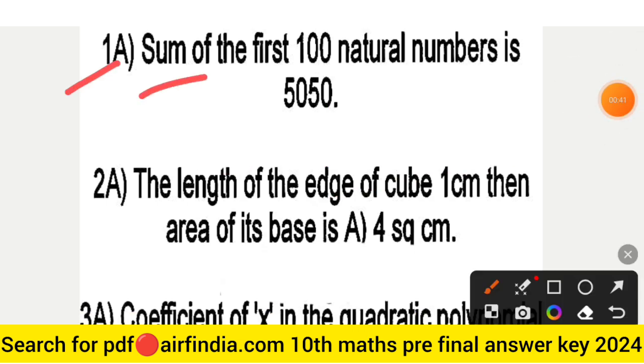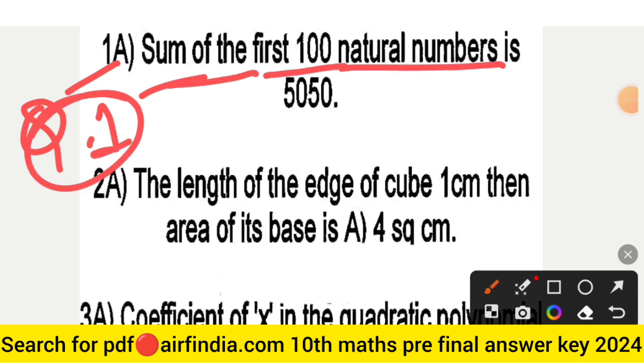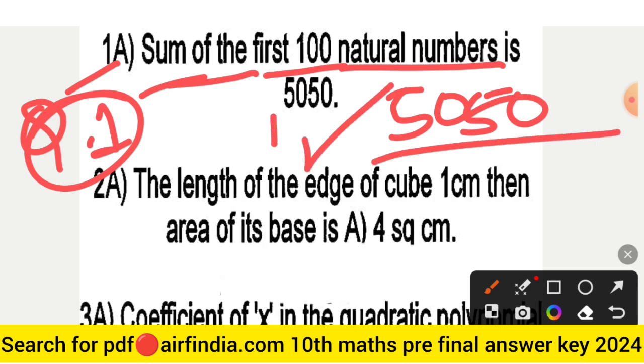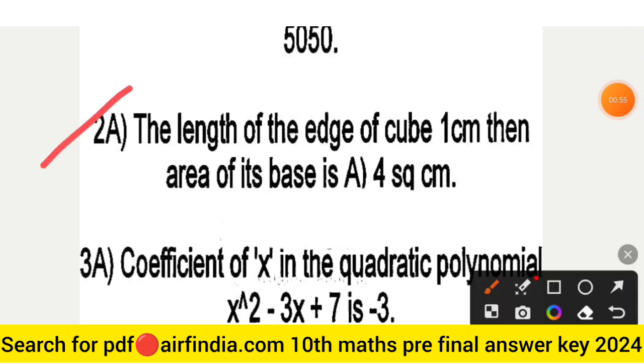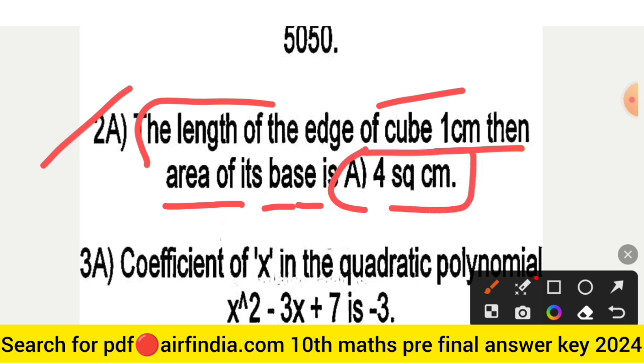This is your page number first. Question number 1A: sum of the first hundred natural numbers is 5050. Next is question 2A: the length of the edge of a cube is 1 centimeter, then area of its base is option A, 4 square centimeter.